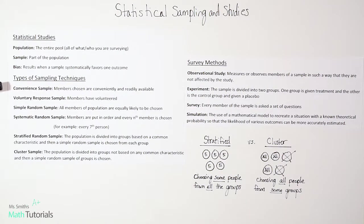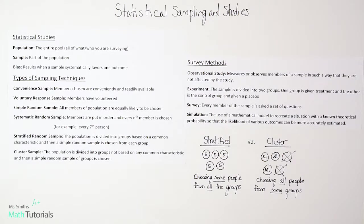We have different types of sampling techniques to talk about. The first one is called convenience sample — members chosen are conveniently and readily available, meaning it works to the benefit of the surveyor; they're just picking people that happen to be there. Voluntary response sample is the next one, where members are people who have volunteered to participate.